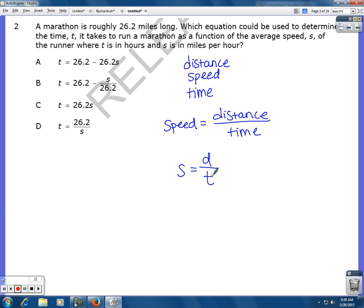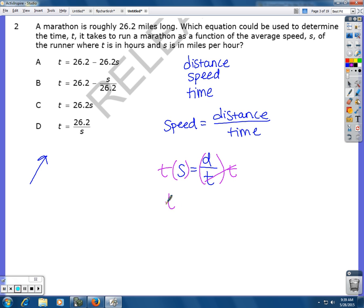Now all of my answers say t equals something. So I'm going to rewrite this equation so that it's in terms of t. So I'm going to multiply t on both sides to get t out of the denominator. And then I'm going to divide by s to get t by itself.